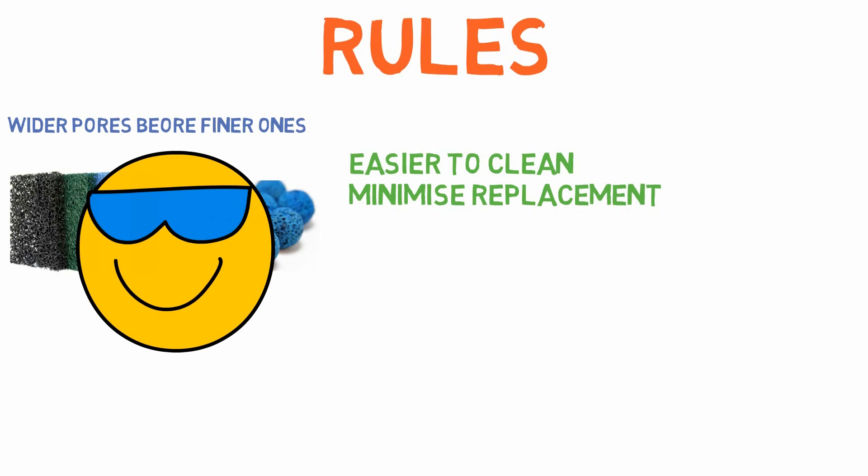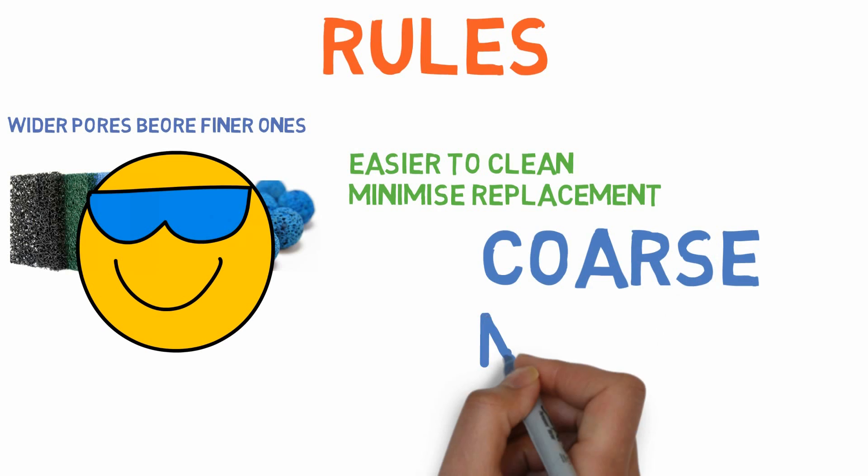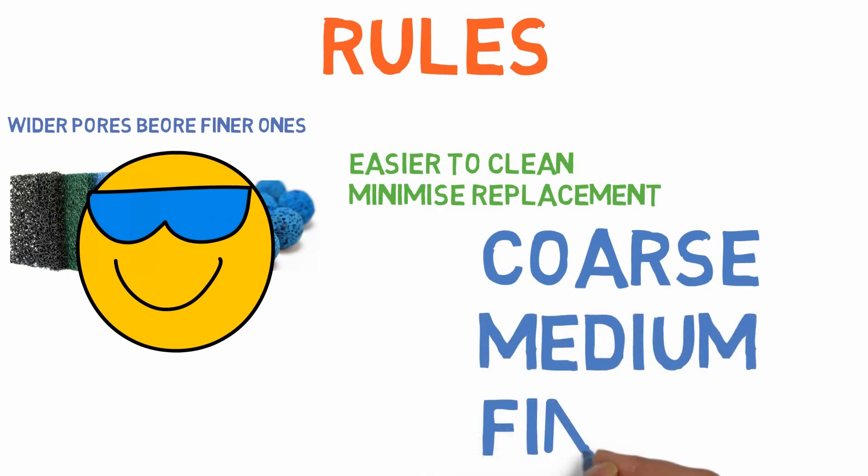So for the best results, you can use three layers of sponge: coarse, medium, and fine. After that, add floss in the bottom. This will optimize the clarity of water before it passes through biological media.